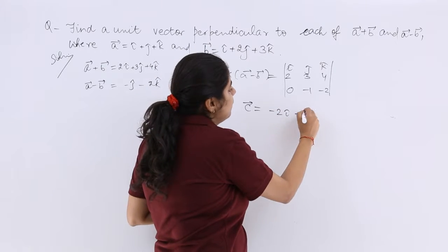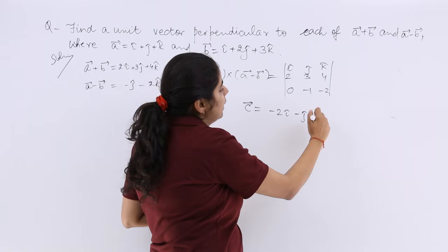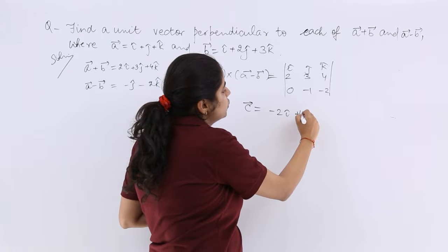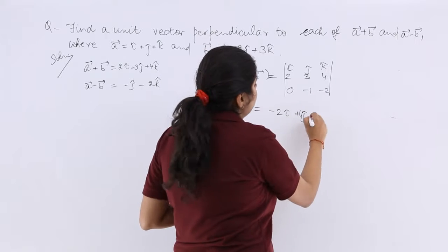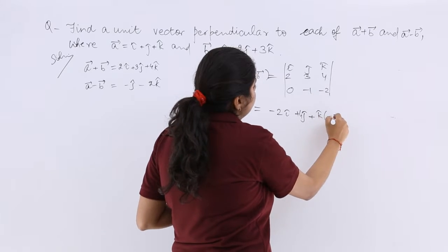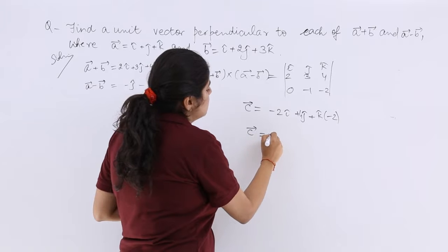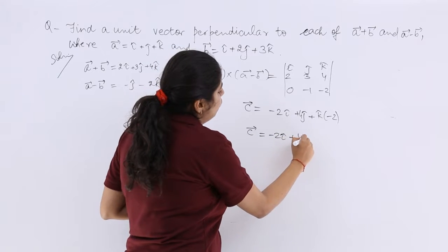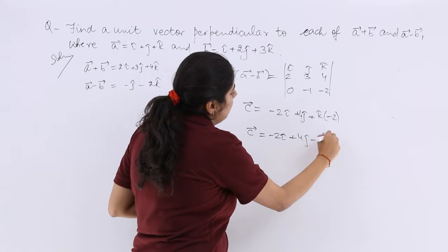Then minus j cap can be written. Then it is minus 4, so it is plus 4j cap. Then plus k cap. So it is minus 2. So what is the answer? The c vector is minus 2i cap plus 4j cap minus 2k cap.